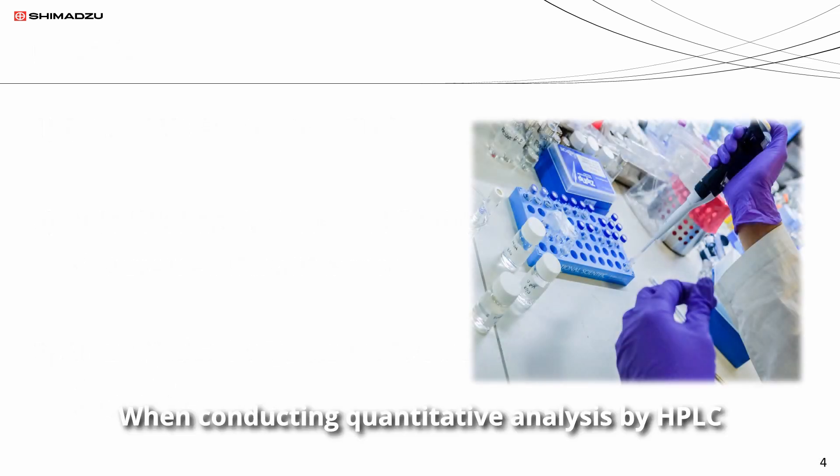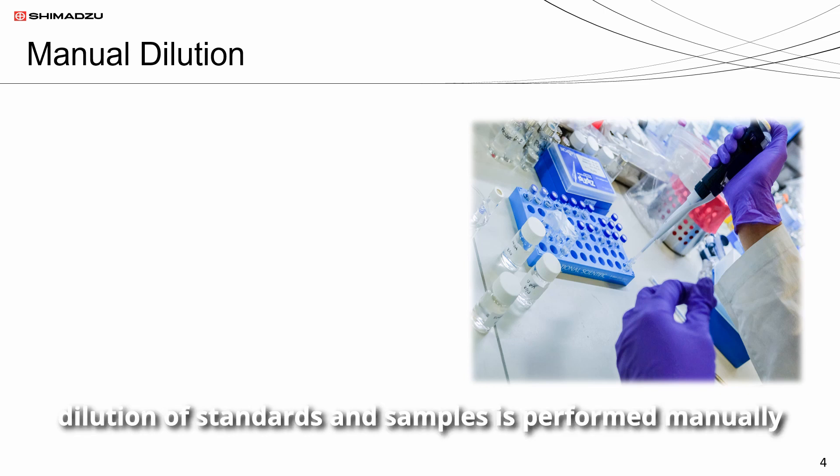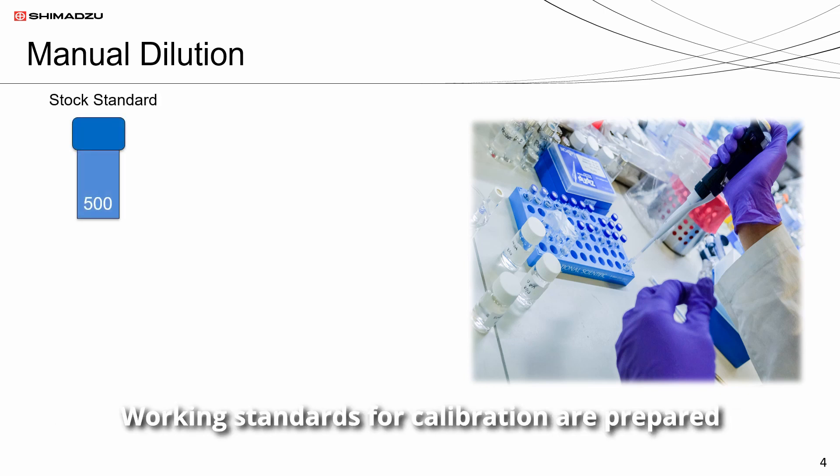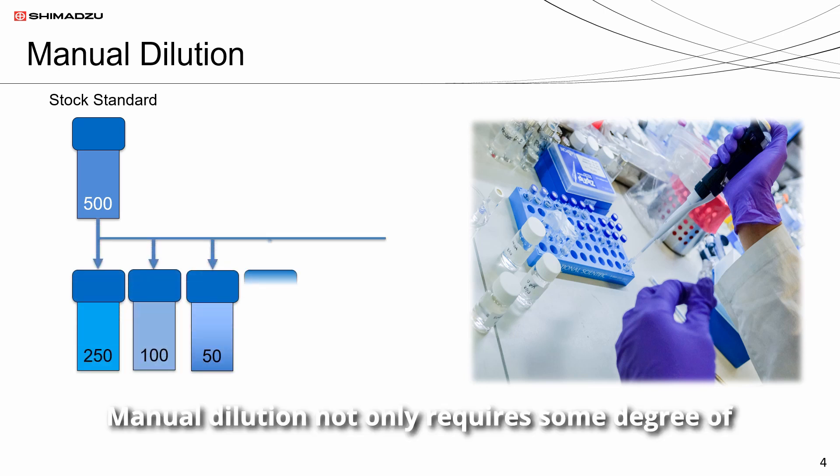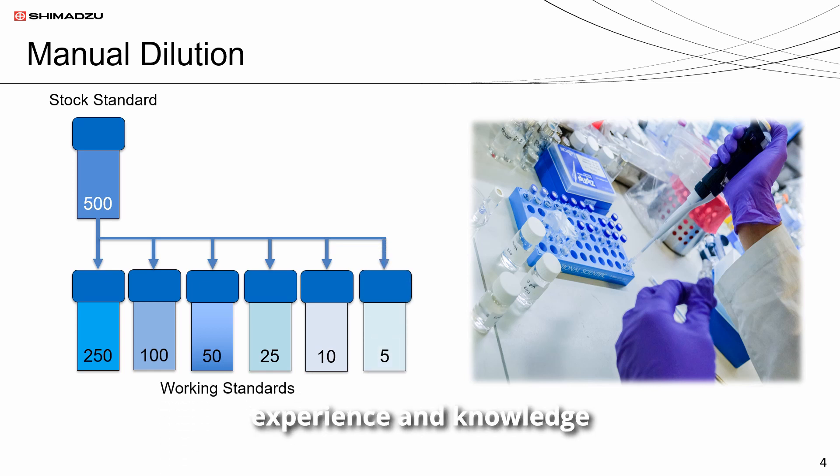When conducting quantitative analysis by HPLC, dilution of standards and samples is performed manually. Working standards for calibration are prepared by serial dilution from stock standard solution. Manual dilution not only requires some degree of experience and knowledge, it also takes time and effort and is more prone to human error.